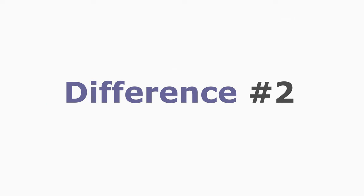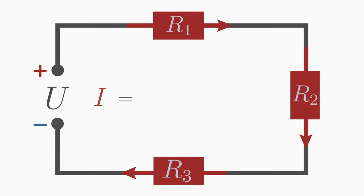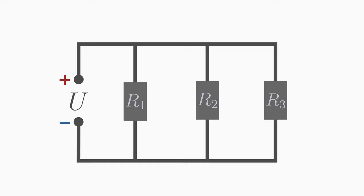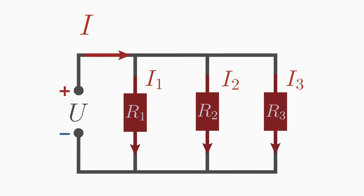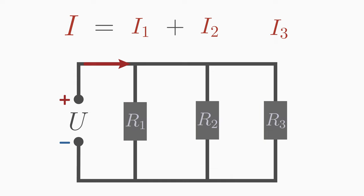Difference number two: in a series connection, the same current flows through all three resistors. The total current I is therefore equal to the current I1 through the first resistor, but also equal to the current I2 and I3 through the other two resistors. In a parallel circuit, however, different currents I1, I2, and I3 flow through the resistors. The total current I is the sum of the individual currents: I is equal to I1 plus I2 plus I3.